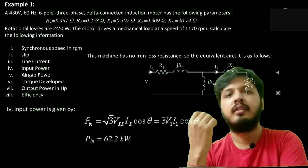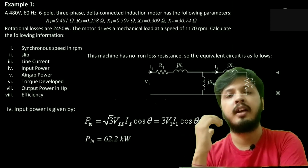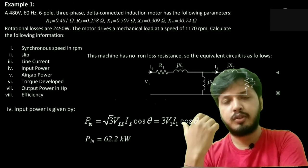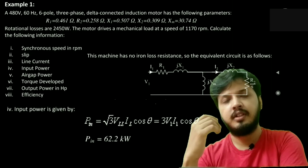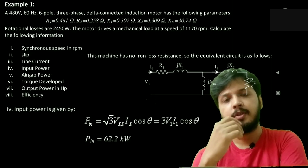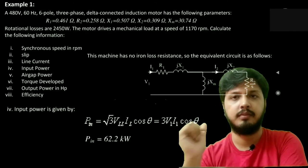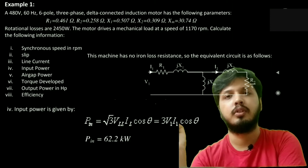Now we will calculate the input power, that is given by root 3 V1 I1 cos phi. V1 and I1 is the line voltage and line current. We can also calculate it with 3 VPH IPH cos phi, that is per phase voltage, per phase current, power factor angle multiplied by 3. Calculating it, we will get 62.2 kilowatt.